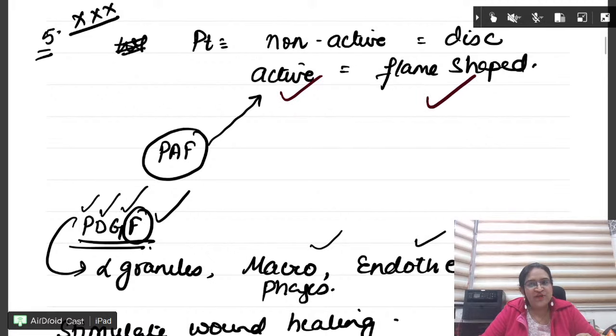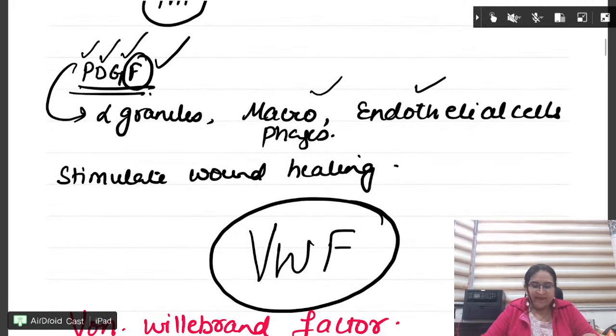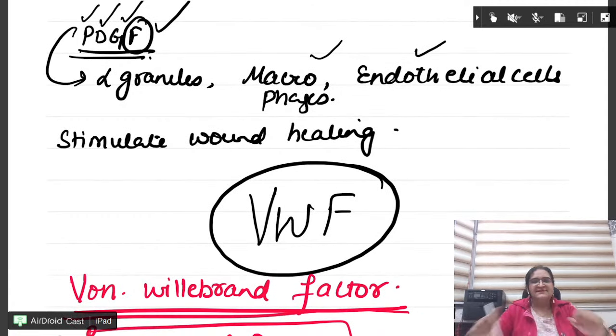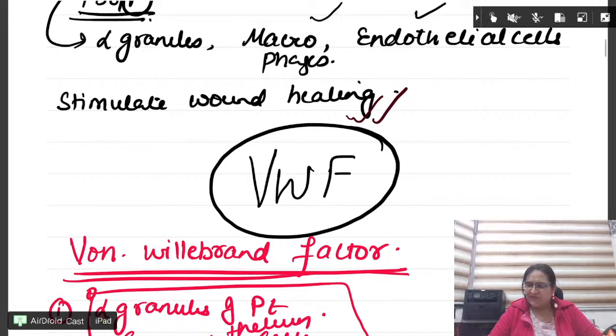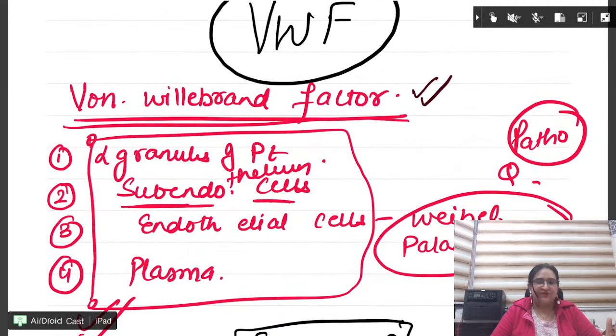Platelets are formed from megakaryocytes. 60 to 70% are in circulation, rest all are in spleen. When I destroy the spleen, splenectomy, then what happens? The platelet in the blood will increase. In a person who has undergone splenectomy, the number of platelets is going to be increased.